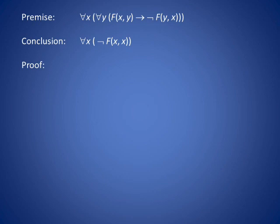We begin the proof by listing the premise on line 1. For all X, for all Y, F of X and Y implies not F of Y and X.